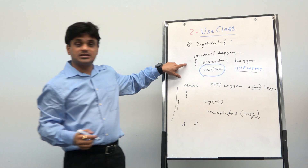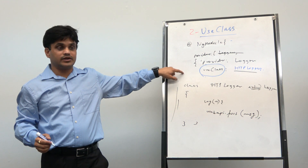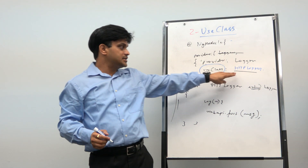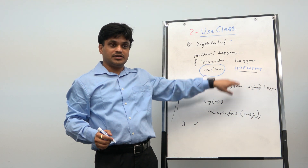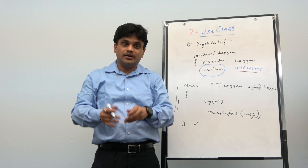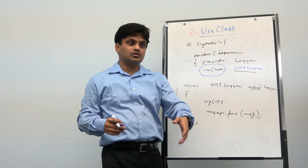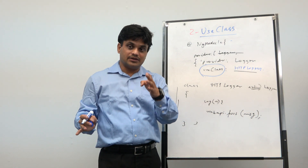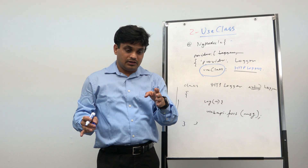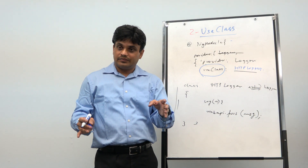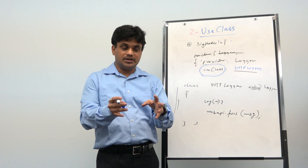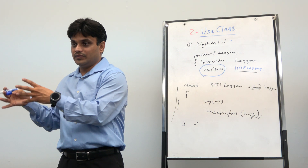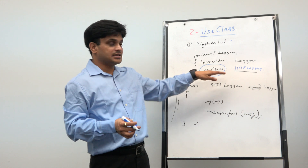This opens the door to change behavior at any time to whatever is needed — and it is very powerful. Tomorrow if they want to log to a file, just create a FileLogger extending Logger, override the log method, and flip the useClass value. The type is changing — HTTP, file, in-memory — but it's all just polymorphism.